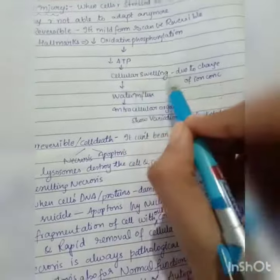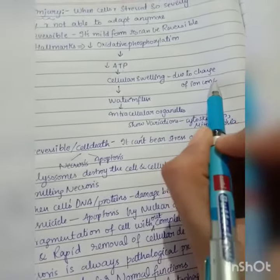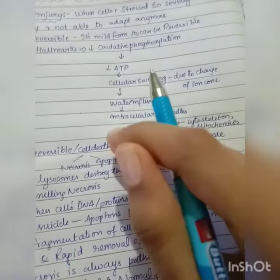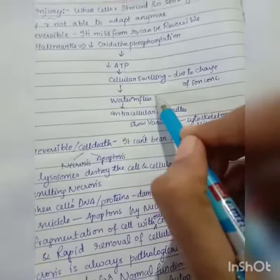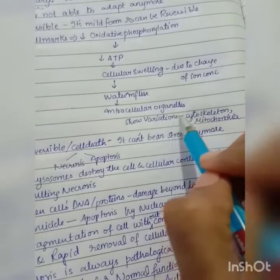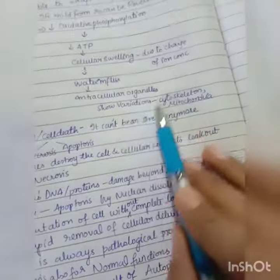This leads to cellular swelling due to the change of ionic concentration. This causes water influx, and intracellular organelles show variations in different organelles like cytoskeleton and also mitochondria.